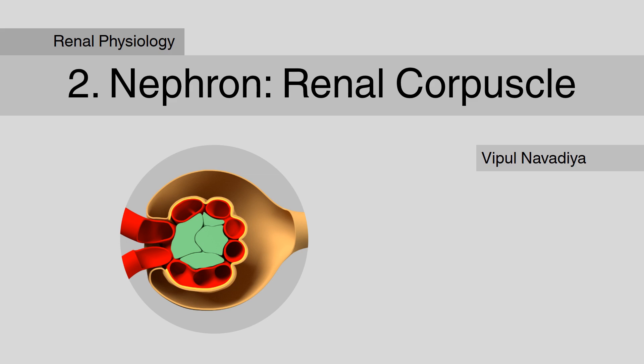Now we will see the structure of nephron. We will learn it over two videos. In this video, we will see renal corpuscle, and in the next one, renal tubule.